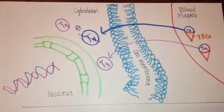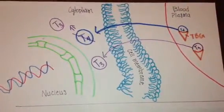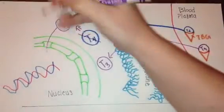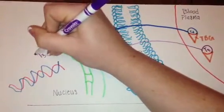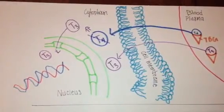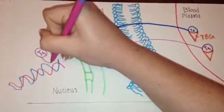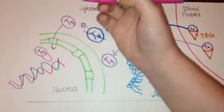Now only T3 enters the nucleus and binds to nuclear receptor proteins. Then, the complex as a whole binds to hormone response elements on DNA.